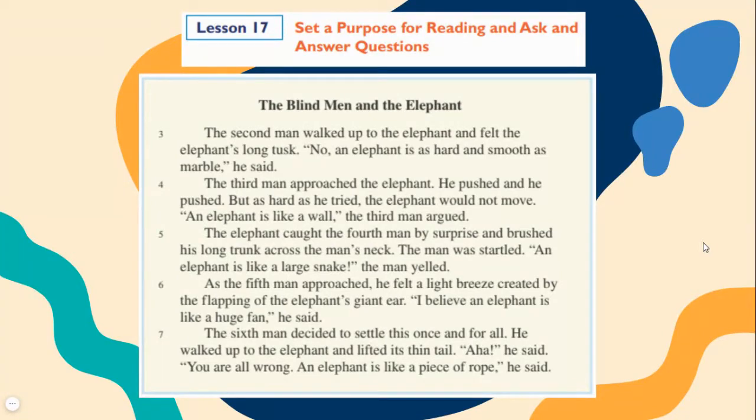Review how the story began. What questions do you have about the rest of the story? These questions can help set a purpose for reading. You can deepen your understanding of a text by asking questions as you read. Asking who, what, when, where, why, and how questions will help you understand what you read.